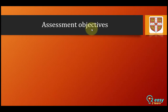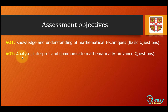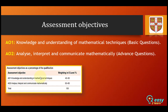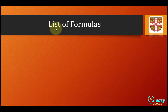Assessment objectives: there are two assessment objectives. AO1 is knowledge and understanding of mathematical techniques — these are basic questions. AO2 is analyze, interpret, and communicate mathematically — these are advanced questions. As a percentage of the qualification, AO1 is 40 to 50% and AO2 is 50 to 60%. In both Paper 1 and Paper 2, AO1 weightage is 40 to 50% and AO2 weightage is 50 to 60%.